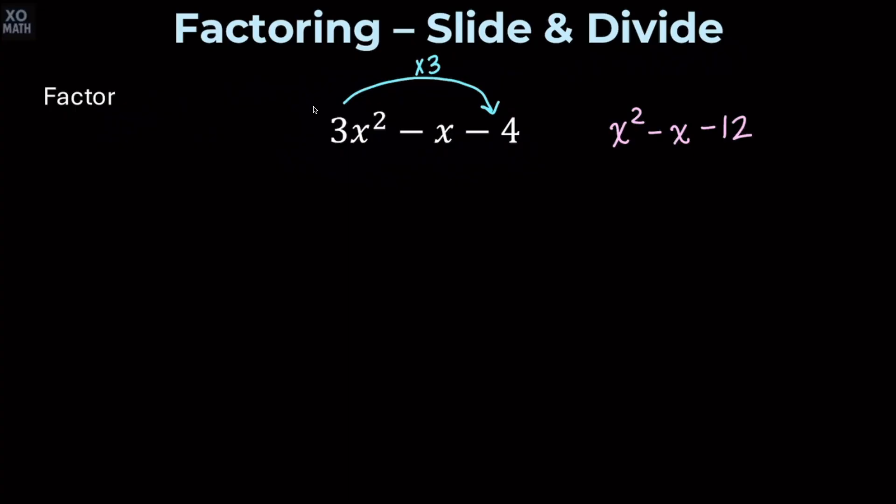So we're going to factor this quadratic. We know that each of the factors is going to start with an x. Two numbers that multiply to give us negative 12 and add to give us negative 1 are negative 4 and positive 3.